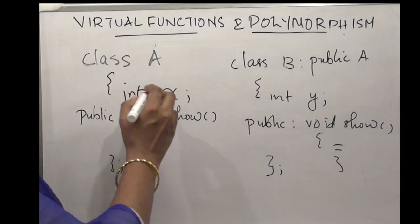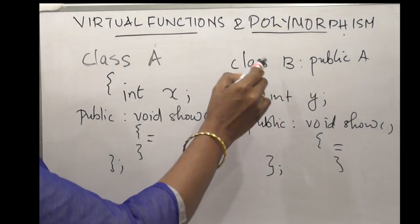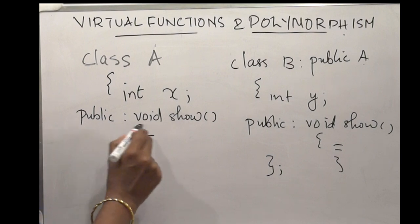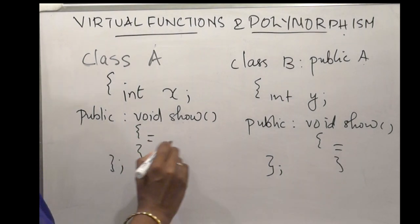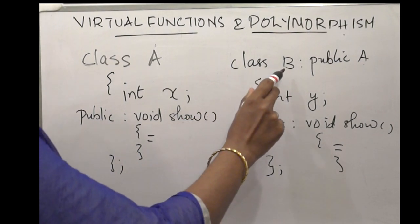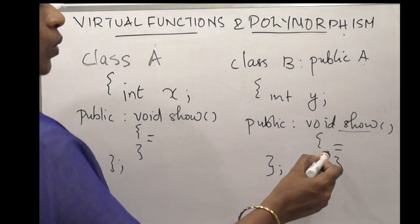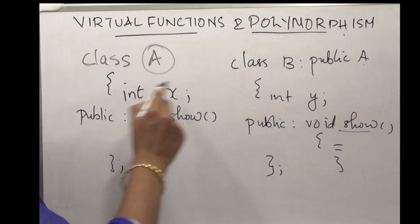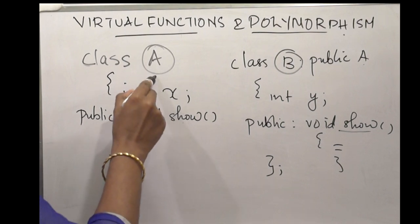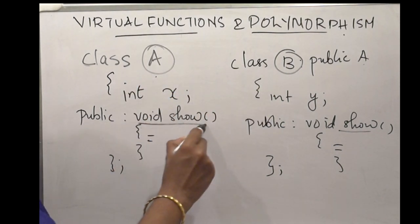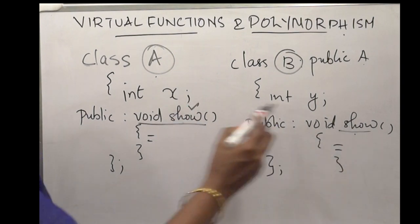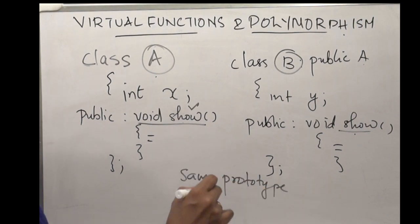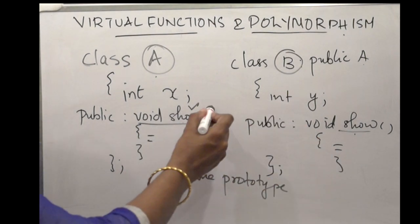Consider this example: class A and class B with inheritance. Class B is inheriting properties from class A. There is a data member x and a public function named void show in class A. In class B also, a function show is defined. When a base class and a derived class have a function with the same name, same prototype, same return type, function name, and arguments, it creates an ambiguity.